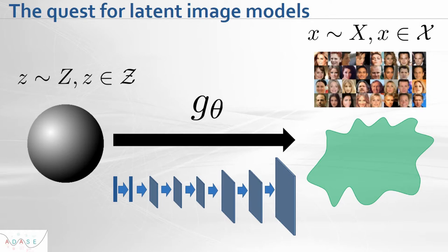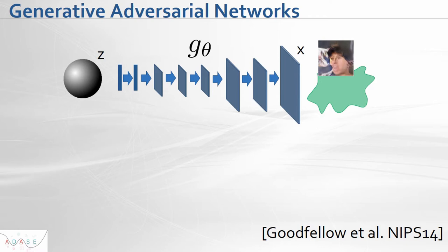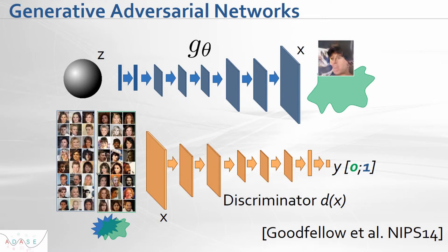In principle, if we tune coefficients of the transformation in an appropriate way, we can model quite complex images. Nowadays, generative adversarial neural networks are very well known as a tool for generative modeling. These networks have two transformations.